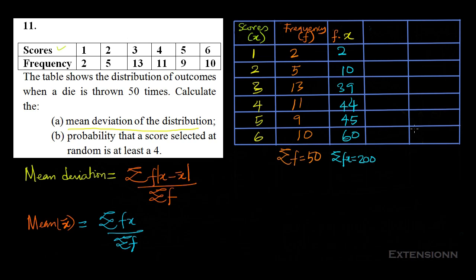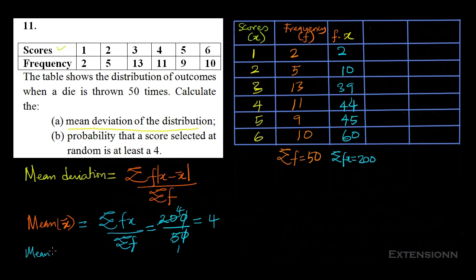Now we calculate the mean: x̄ = Σfx / Σf = 200 / 50 = 4. So our mean, x̄, equals 4.